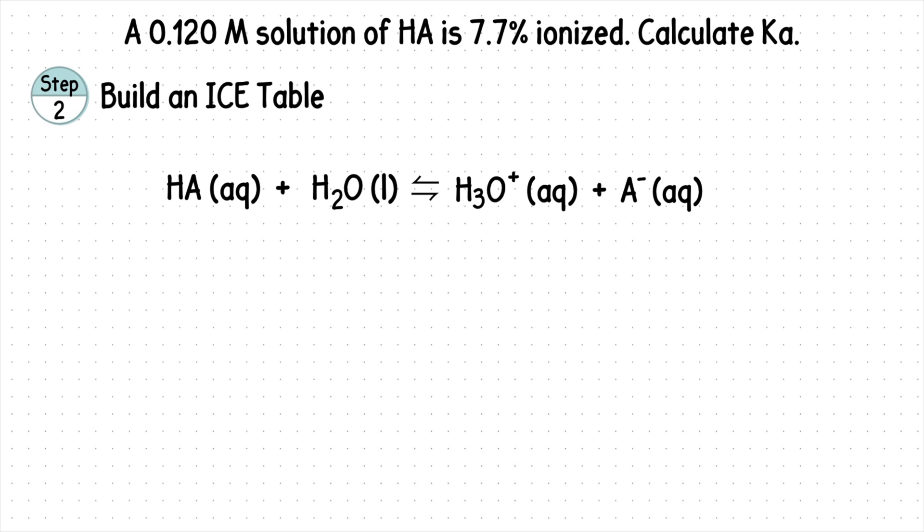Step two, build an ICE table. Our equation would look like this where we added the generic weak acid of HA to water. The acid donates an H plus to water to form our hydronium ion and conjugate base.